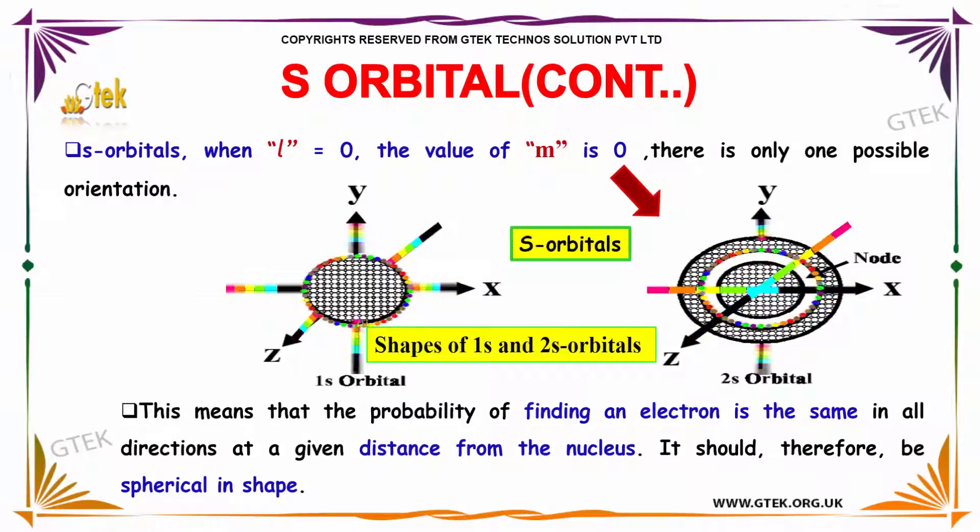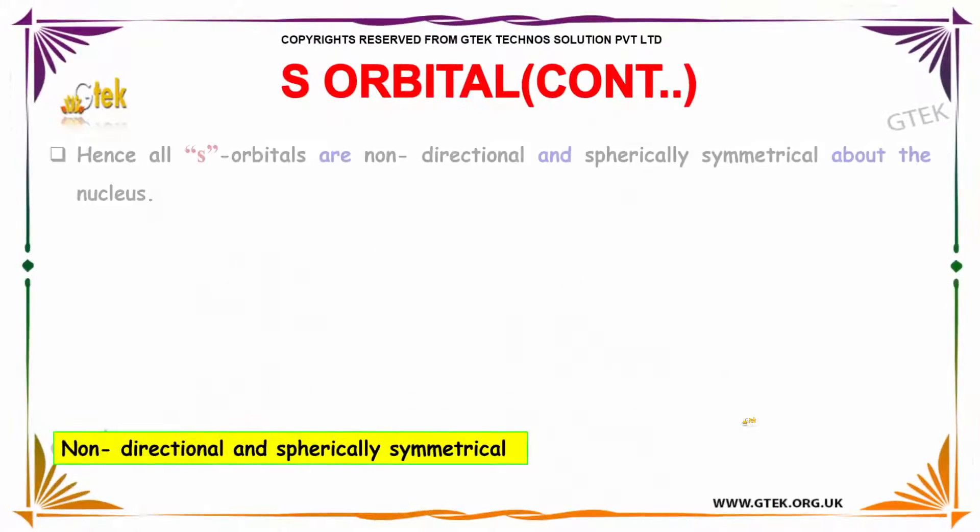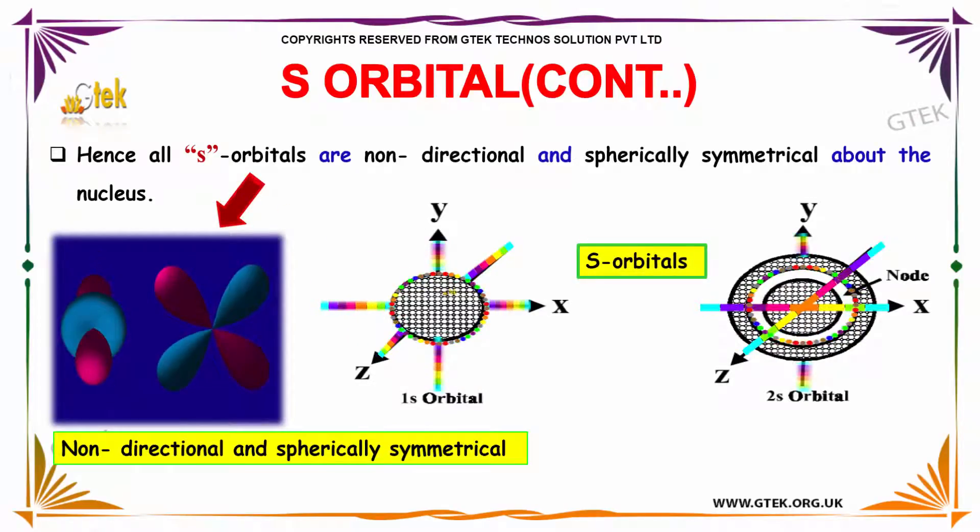This is your 1s orbital and this is your 2s orbital. Hence, all S-orbitals are non-directional and spherically symmetrical about the nucleus.